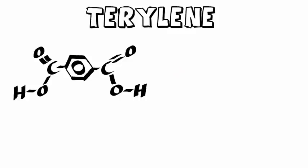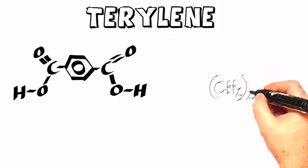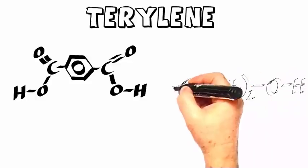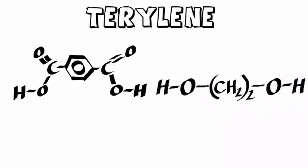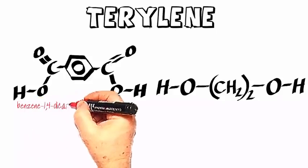So there's our dicarboxylic acid. You can see it's got a benzene ring between two carboxyl groups. And here's our diol. You can see that we have OH groups at both ends.